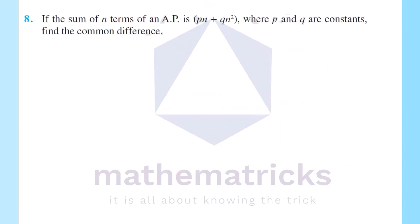Next problem: If the sum of n terms of an AP is pn plus qn squared, where p and q are constants, find the common difference.